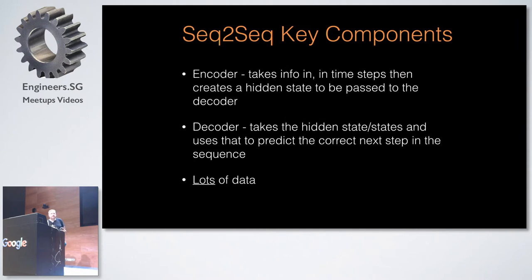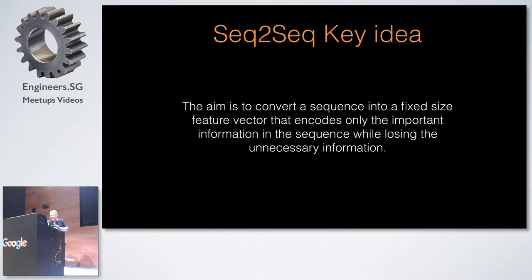There are two main components to a sequence-to-sequence model. You've got your encoder, which takes the info in at time steps, creates a hidden state, and sets it up to be passed to the decoder. The decoder then takes that hidden state and uses it to start predicting things. The other crucial thing with these kinds of models is you need a lot of data — an unbelievable amount of data often.